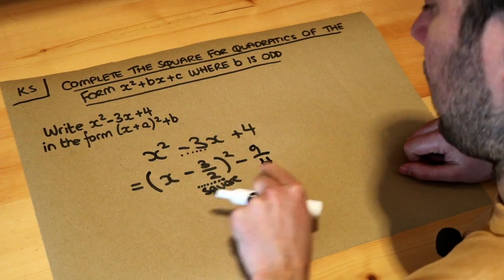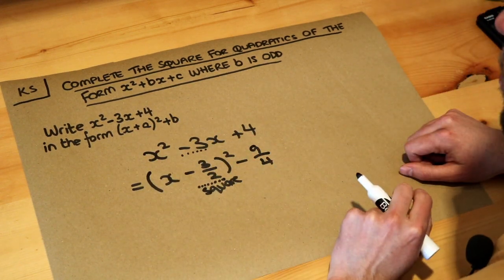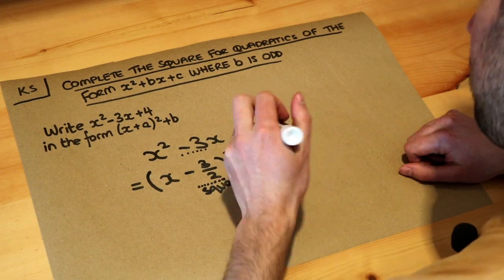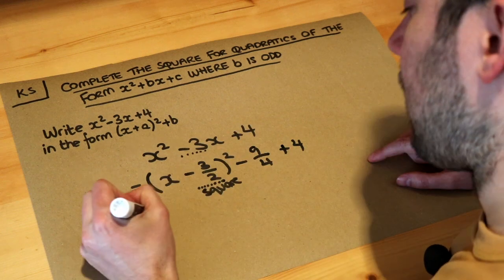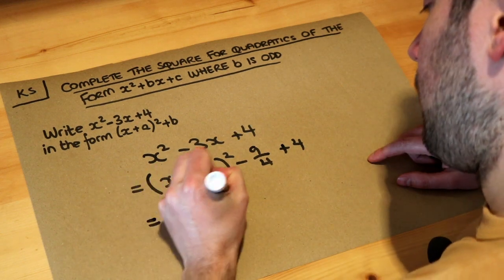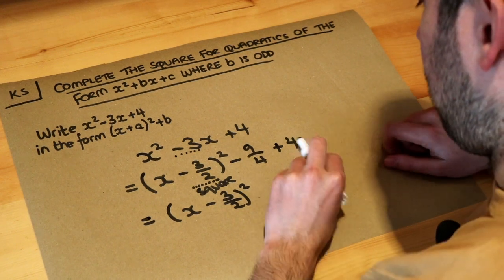So we always subtract this because minus 3 over 2 all squared is 9 over 4, and then we subtract whatever that number is. Now we've still got that plus 4 here and we probably want to simplify, so combine these together. Now what I tend to do is I write that 4 as something over 4.